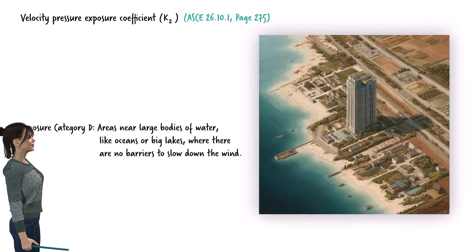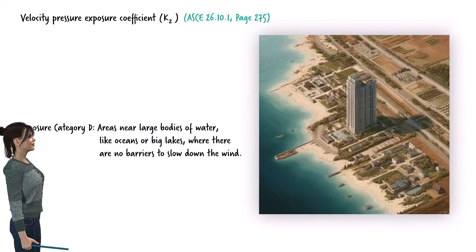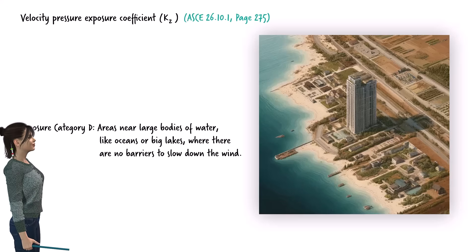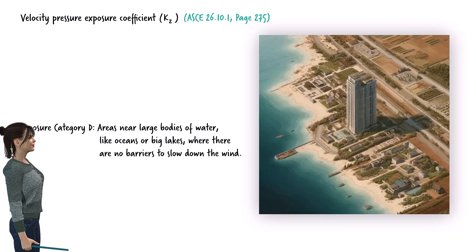Category D is for areas near large bodies of water, like oceans or big lakes, where there are no barriers to slow down the wind. In these places, the wind can blow freely and get very strong because there are no buildings, trees, or other obstacles in the way. This category applies to locations right at the shoreline with open water extending at least 5,000 feet.